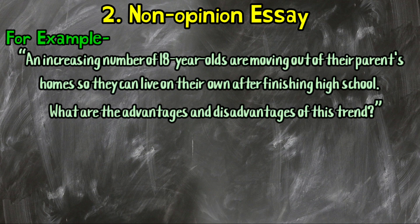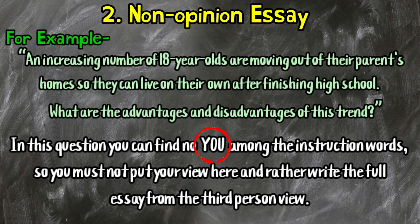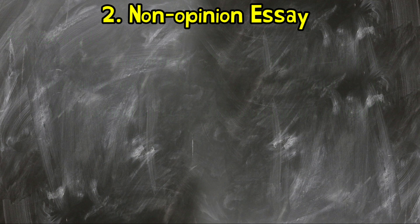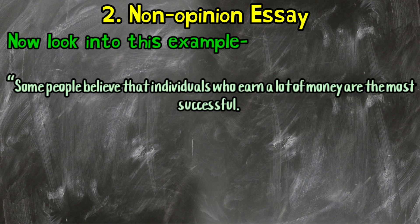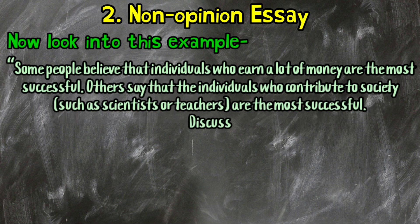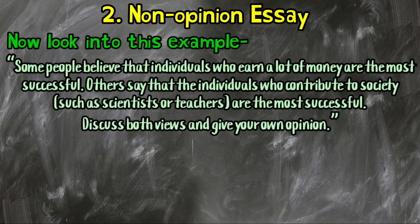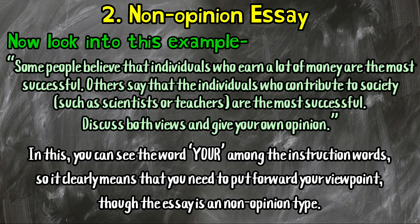For example: 'An increasing number of 18-year-olds are moving out of their parents' homes so they can live on their own after finishing high school. What are the advantages and disadvantages of this trend?' In this question you can find no 'you' among the instruction words, so you must not put your view and rather write the full essay from a third-person view. However, look at this example: 'Some people believe that individuals who earn a lot of money are the most successful. Others say that individuals who contribute to society, such as scientists or teachers, are the most successful. Discuss both views and give your own opinion.' Here, you can see 'your' among the instruction words, so you need to put forward your viewpoint, though the essay is a non-opinion type.